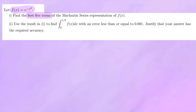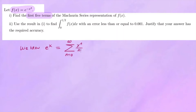We know that the Maclaurin series for e to the x, centered at 0, can be represented as the sum starting from 0 to infinity of x to the n over n factorial. Now since our function f of x equals e to some power, we're going to replace that power, and that will give us the Maclaurin series representation of e to the negative x to the 4th.